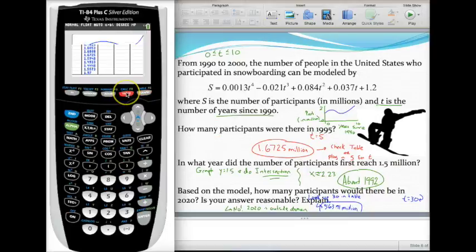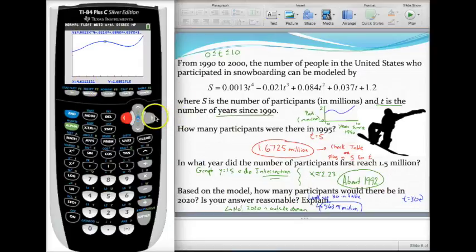Another way is from your graph hit the trace key and if you hit left or right you can trace out different x values. I was lucky enough that x ended up on five and there's my 1.6725 million. But suppose they wanted four to represent 1994. If I scroll I don't get to four exactly, but here's a cool little trick: just type in four or whatever x value you're trying to find and hit enter and it'll jump right there for you. So in 1994 there were about 1.68 million participants.